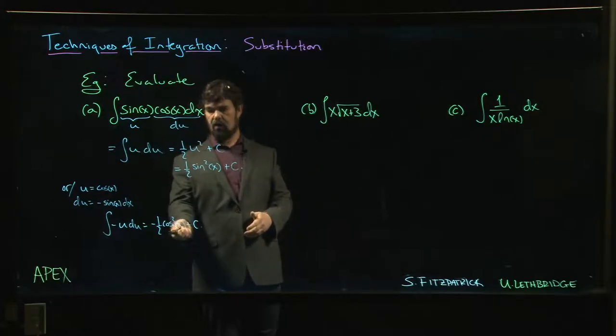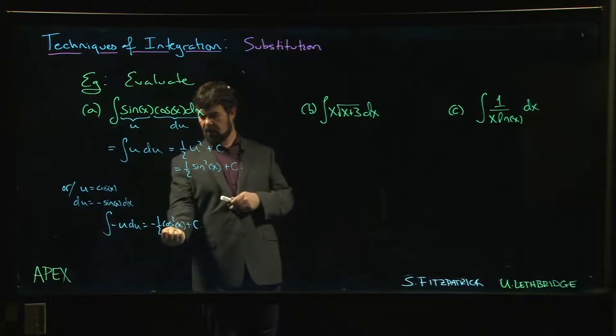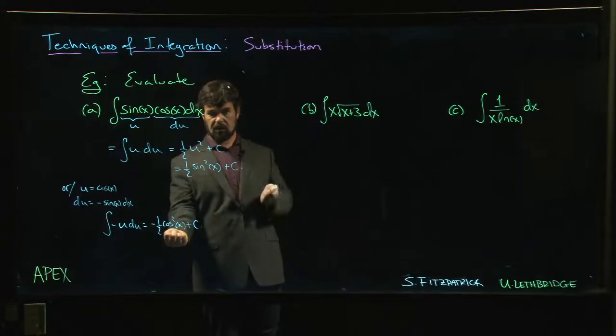You get half sine squared minus minus half cos squared - half sine squared plus half cos squared. Sine squared plus cos squared is one.